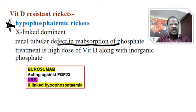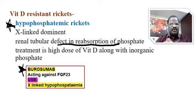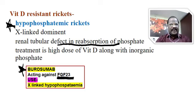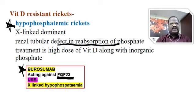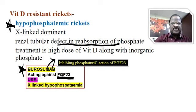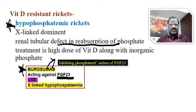One new important drug is burosumab — B-U-R-O-Z-U-M-A-B — a monoclonal antibody. It acts against fibroblast growth factor 23. Normally, fibroblast growth factor 23 causes phosphaturia by increasing phosphate excretion. Burosumab inhibits this phosphaturic action of fibroblast growth factor 23, thereby useful for treatment of X-linked hypophosphatemia. So burosumab is one of the latest drugs useful for treatment of vitamin D-resistant rickets, also called hypophosphatemic rickets.